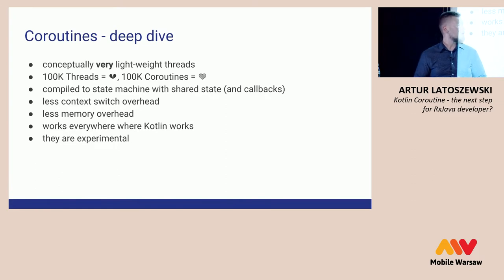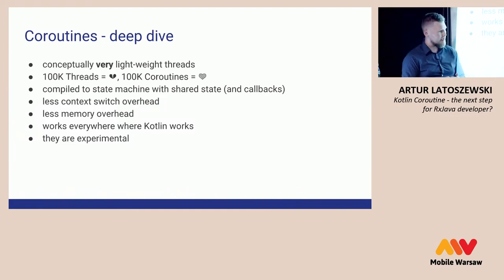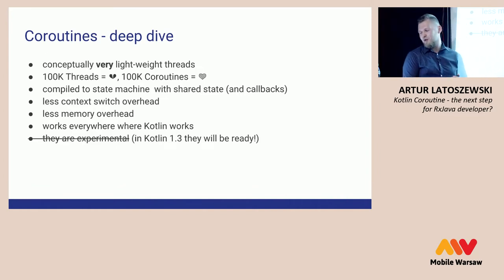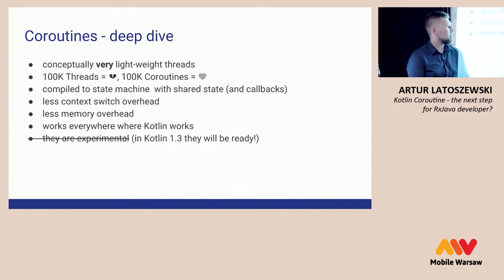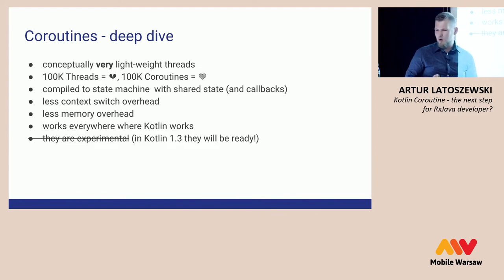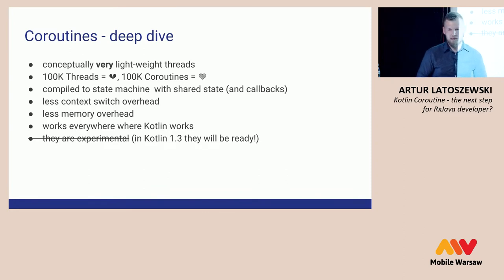Coroutines work everywhere where Kotlin works, so everywhere with JVM with Java 1.6. Unfortunately there is one problem — they are experimental. But not anymore: they were experimental, but in Kotlin 1.3 they will be ready. Of course they are still experimental now, but you can use them in production apps. Many production apps use them for asynchronous communication — for example, Monzo, one of the biggest financial startups.